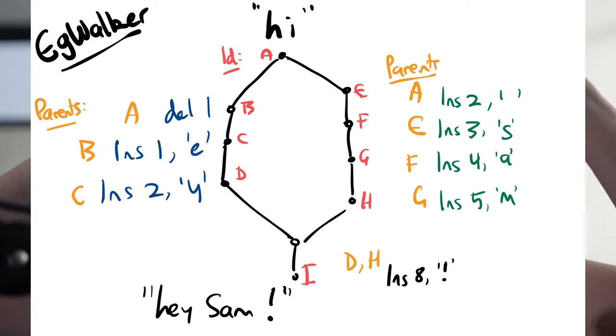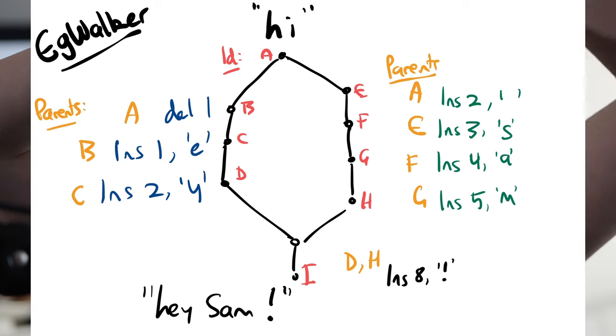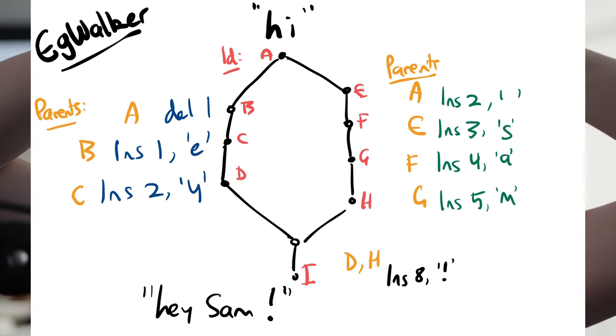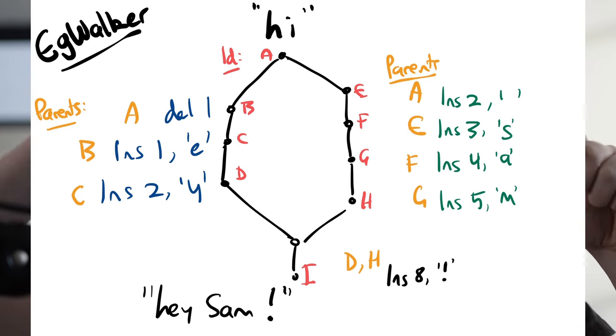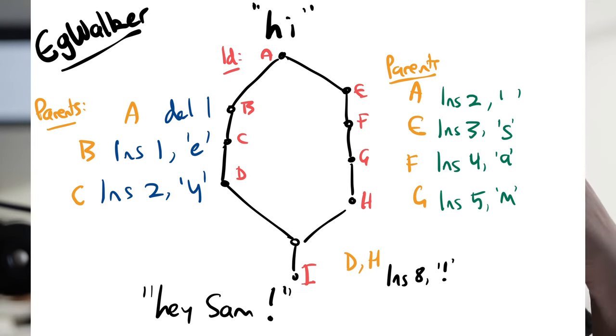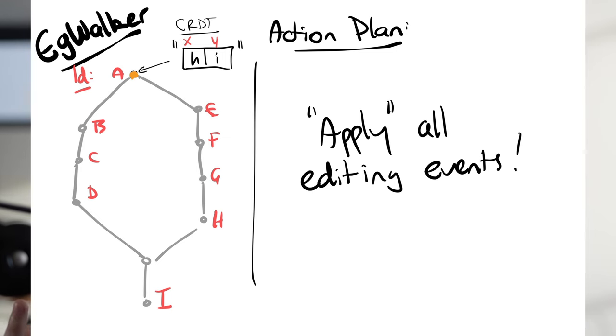The general approach is this: based on the event graph, we've got some old changes that bring us to the current point in time that typed the word 'hi', then my changes that change it from 'hi' to 'hey', and your changes that type in 'Sam'. What we want to do is, based on this graph, come up with a plan for how we can apply all of these changes to a local CRDT object to merge all the changes and get the final document state of 'hey Sam'. There are two stages: first, we come up with an action plan — all of the actions we need to perform. Then we apply all of those actions to a slightly augmented CRDT.